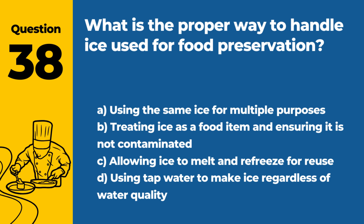Question 38: What is the proper way to handle ice used for food preservation? a. Using the same ice for multiple purposes. b. Treating ice as a food item and ensuring it is not contaminated. c. Allowing ice to melt and refreeze for reuse. d. Using tap water to make ice regardless of water quality. Answer: b. Ice used for food preservation should be treated as a food item, which means it must be handled in a way that prevents contamination, similar to how other food items are handled.